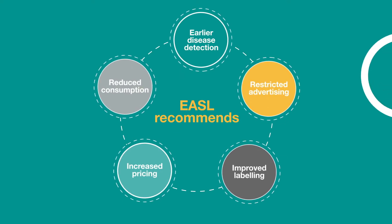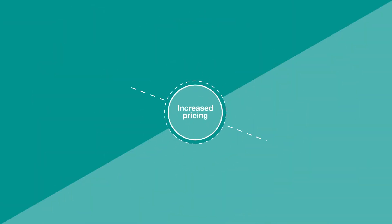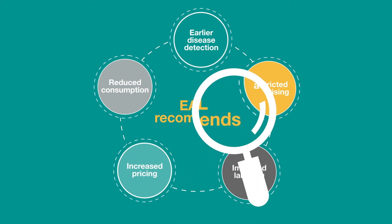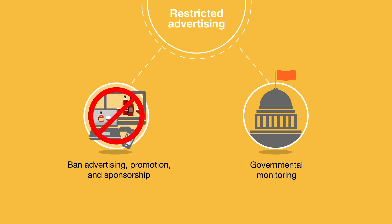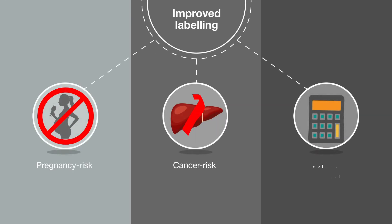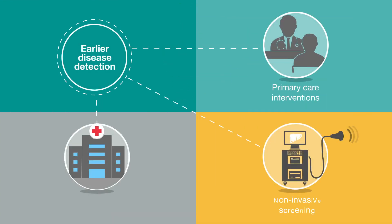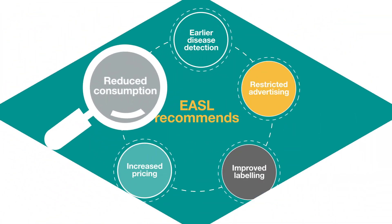EASL are calling on all European countries to implement population-level strategies to tackle ARLD across five goals: introducing taxes and pricing policies to drive up the cost of alcohol; restricting advertising of alcohol products, particularly to young people, with government monitoring; the implementation of more graphic mandatory labeling showing the risks of alcohol consumption; the introduction of non-invasive screening; and improved primary and specialist care services and reducing alcohol consumption overall.